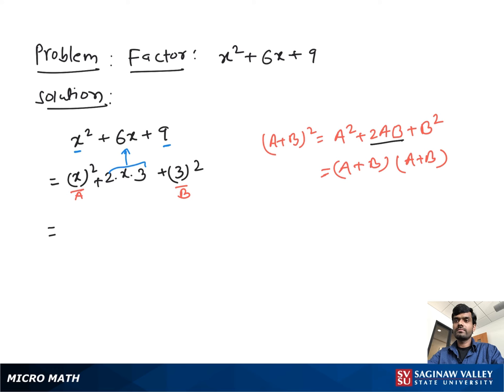So you can write this as (x + 3) squared, or you can also write this as (x + 3) times (x + 3). And this is our final factor.